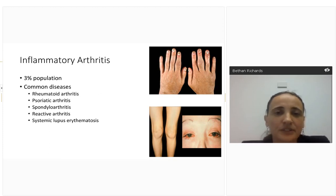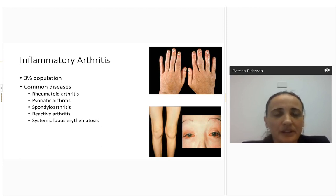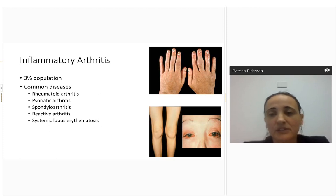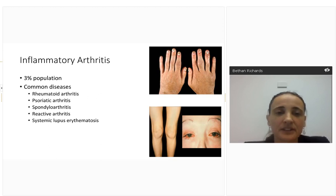The first thing is to define what we mean by inflammatory arthritis — essentially any condition affecting the joints where inflammation is present. The most common is rheumatoid arthritis, which affects one in every hundred people. Others you might encounter include psoriatic arthritis, spondyloarthritis affecting the spine and joints, reactive arthritis following infection, and connective tissue diseases such as systemic lupus erythematosus. I'll focus on these tonight to give tips on recognising the cause of pain in these patients.